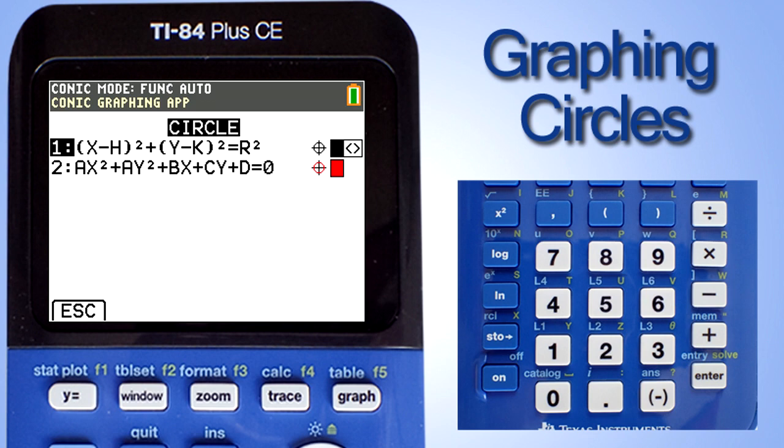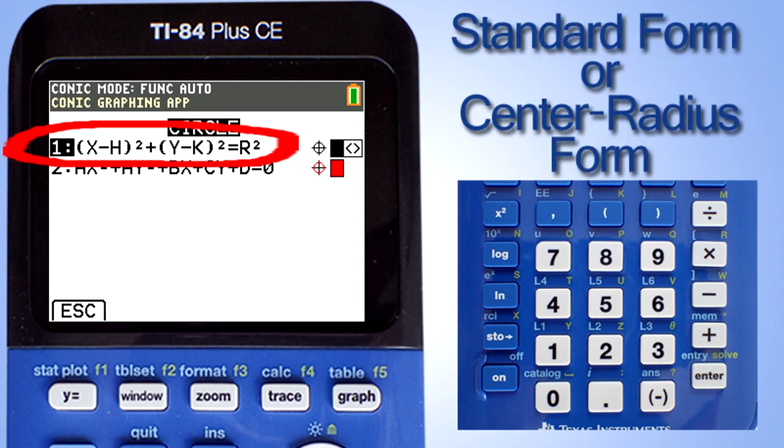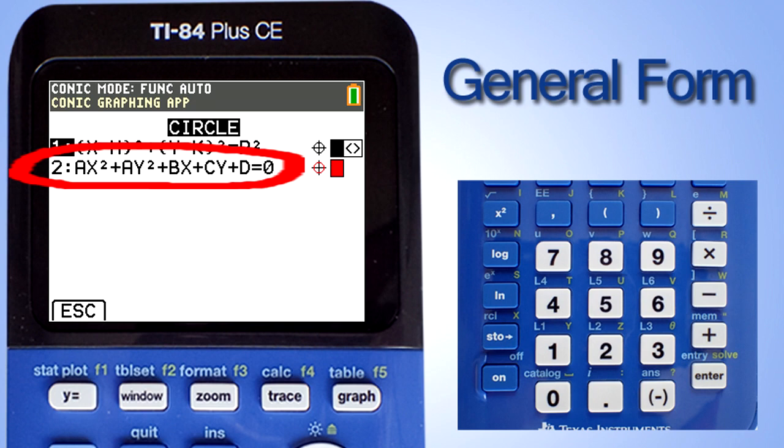Now we see two standard equations for a circle. The first equation is referred to as the standard form and is also referred to as the center-radius form. The second equation is known as the general form equation for a circle. The general form is basically the first equation multiplied out.